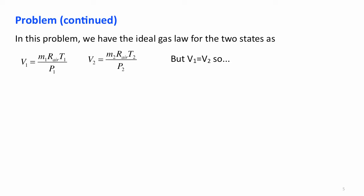But we were told that the volume remains constant. That is, V1 equals V2. So we can take these two state equations and we can equate them. That is, MRT over P is equal to MRT over P.